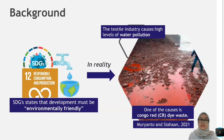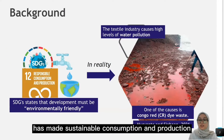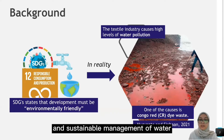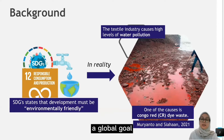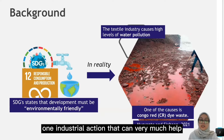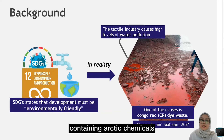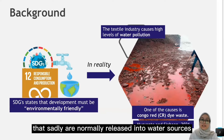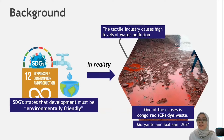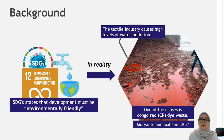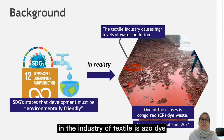The United Nations has made sustainable consumption and production, alongside the availability and sustainable management of water, a global goal. One industrial action that can very much help achieve this goal is to control industrial effluence containing toxic chemicals that are normally released into water sources. The textile industry is one of the biggest industries in the world today, and one of the most common chemicals used is textile dye.